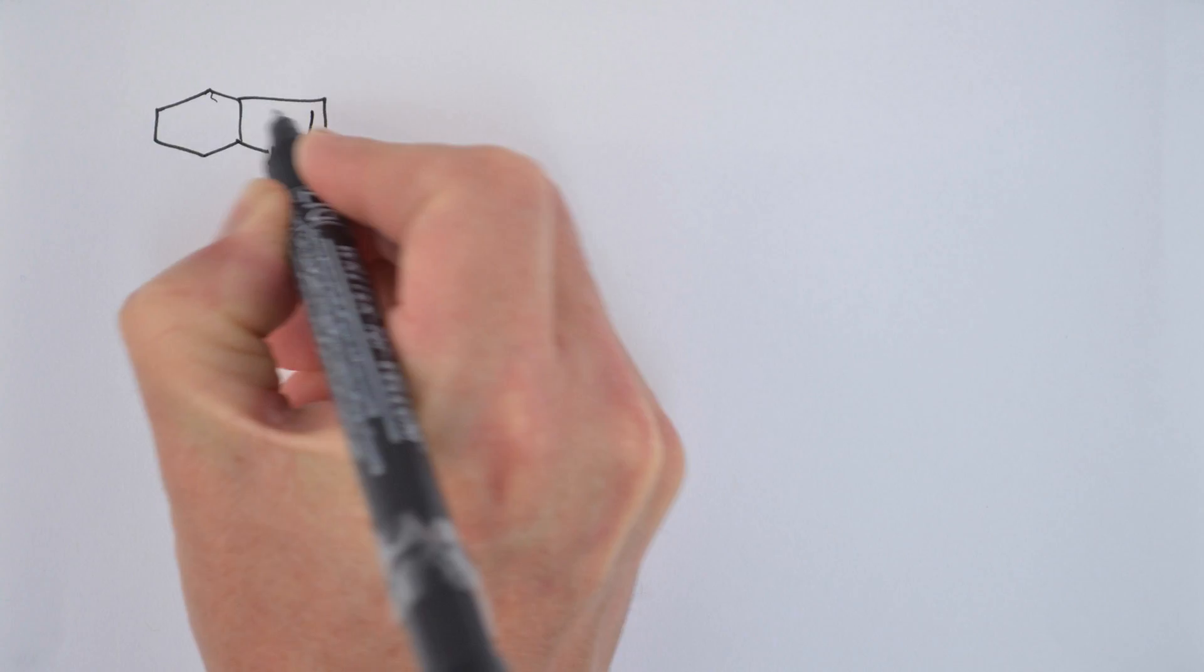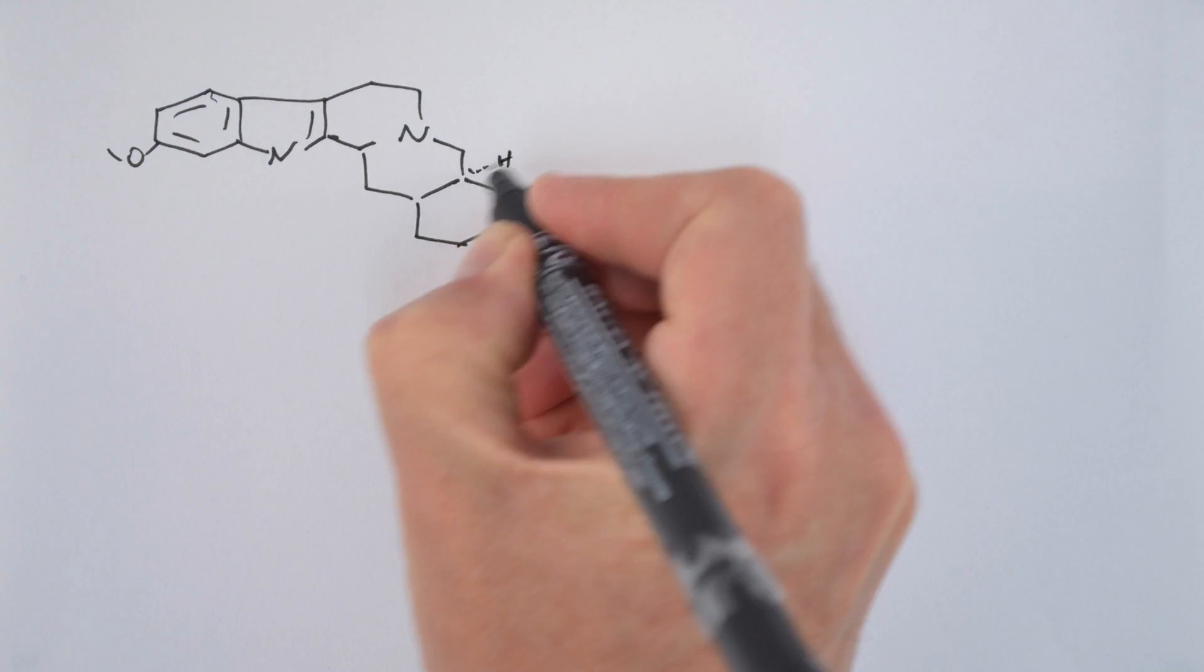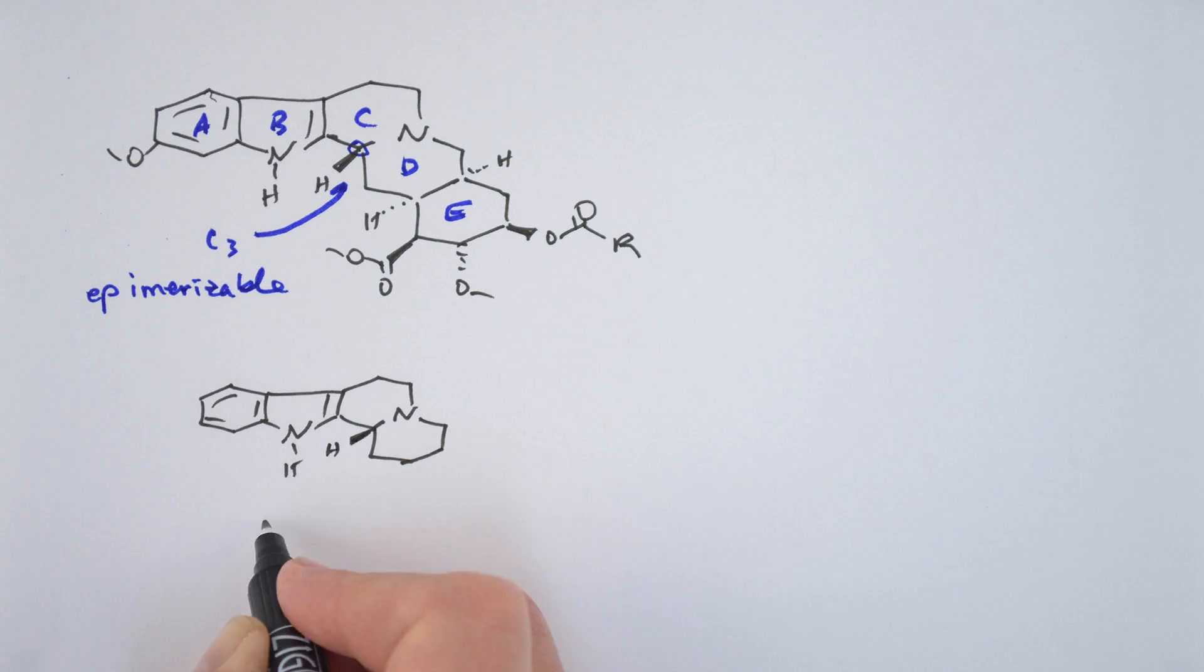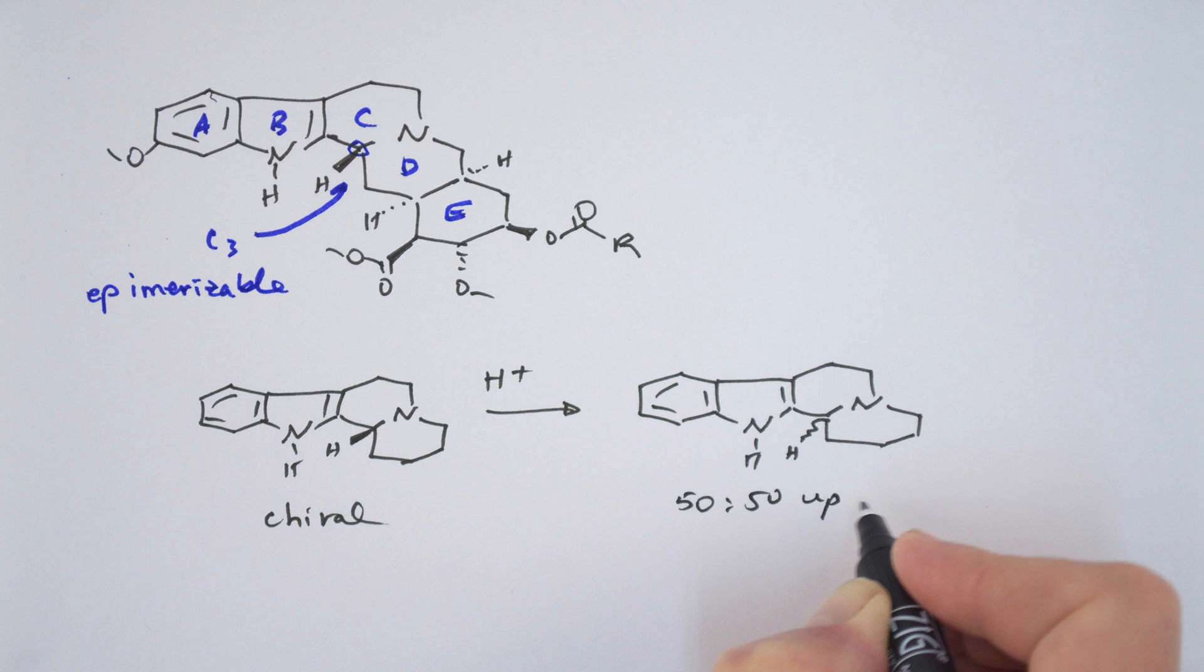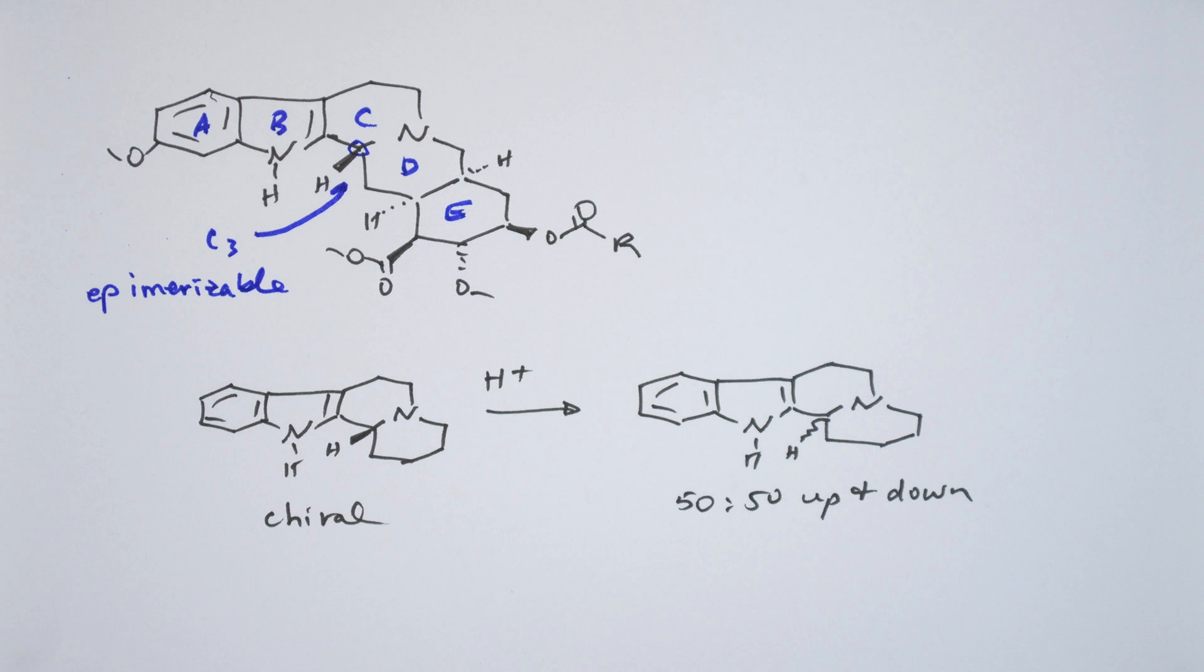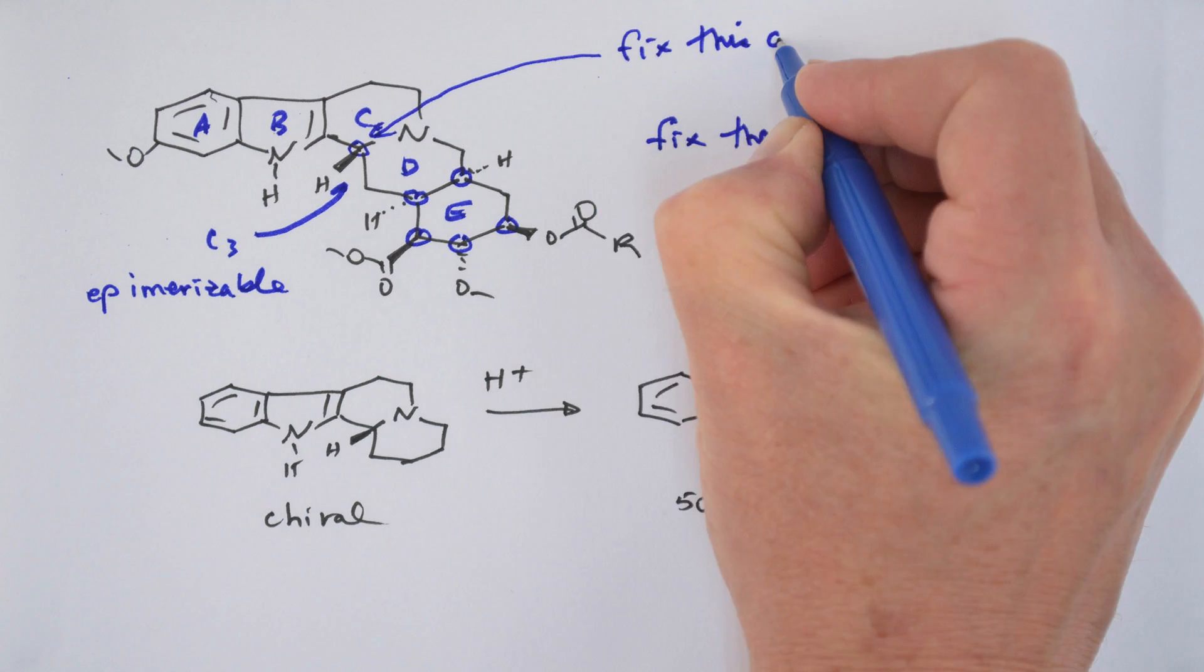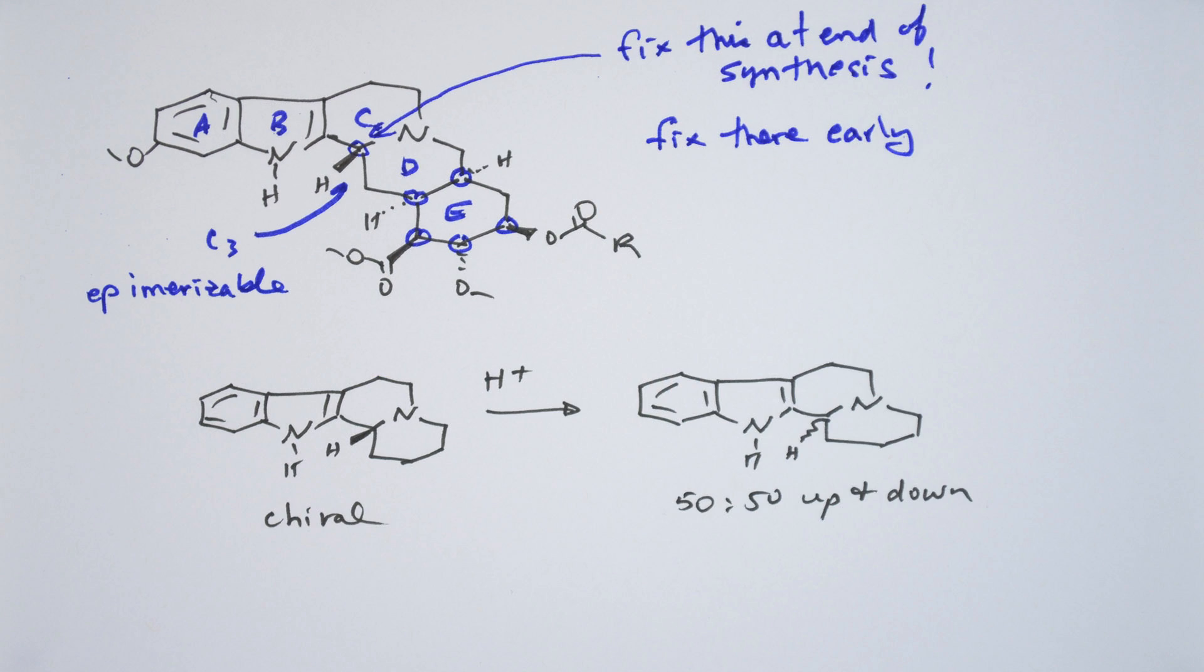Another important fact that Woodward knew, as a result of previously published studies on yohimbine alkaloids, was that the chirality at C3 of the molecule was epimerizable under acidic conditions. That is, in compounds where the C3H was up, say in this chiral indole molecule, treatment with acid results in a racemic mixture of up and down. This is important because it means that Woodward could concentrate on setting up the five chiral centers in ring E, and the chirality at C3 could presumably be established later in the synthesis under acidic conditions.